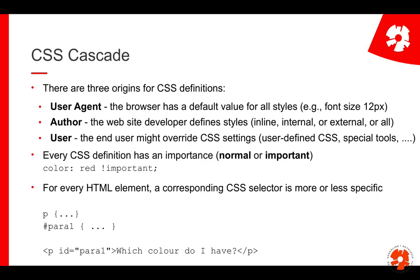This means there is a different order of how important different declarations are, and which one wins in the end. You can define CSS at three different places. First, you have the user agent — that's really the browser. For example, Firefox might have a default font size of 12 pixels. Then you have the author — if you are writing HTML and CSS code, you can use inline, internal, or external definitions. And finally you have the user — the end user visiting your website — who might also have their own CSS settings, for example a special accessibility tool that makes everything larger.